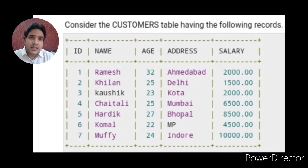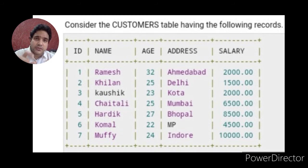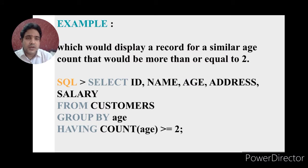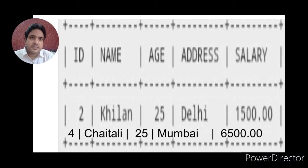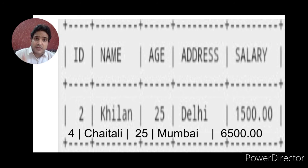Looking back at the table: ID 2 (Chelan) has age 25, and ID 4 (Chetali) also has age 25. There are two tuples having the same age 25, so the count is 2 and the condition is true. The output will show ID 2 and ID 4 — Chelan and Chetali's records will be displayed because their age is equal and the count of tuples is 2.